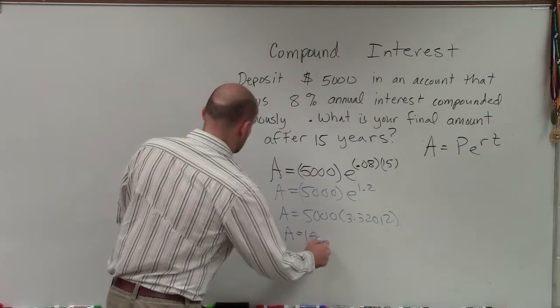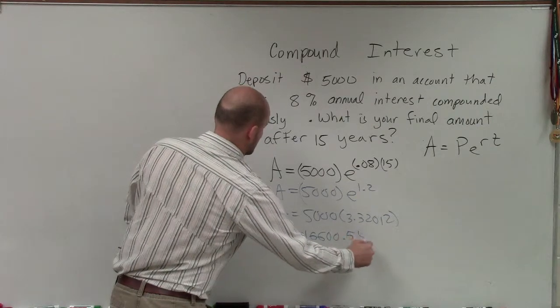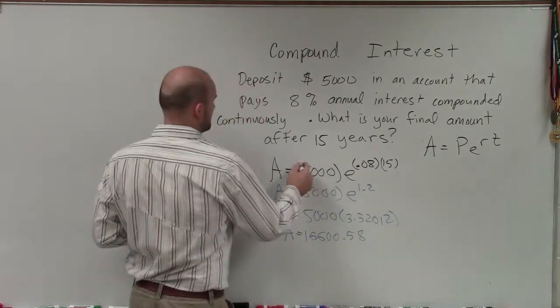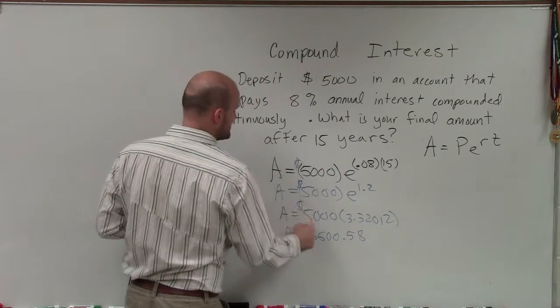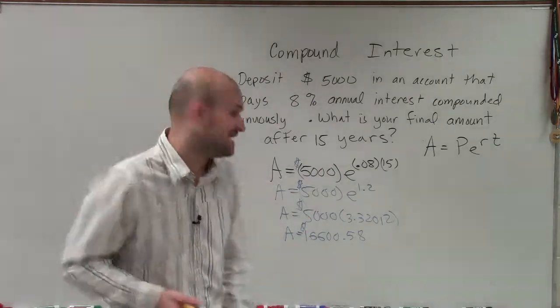Times 5000, A equals 16,600. I forgot to put in my money symbols, right? You're dealing with money, so you've got to put in symbols. So therefore, you have $16,658.